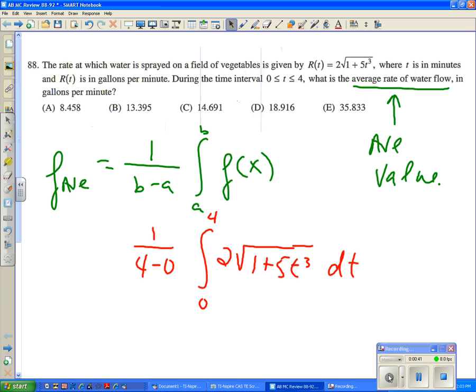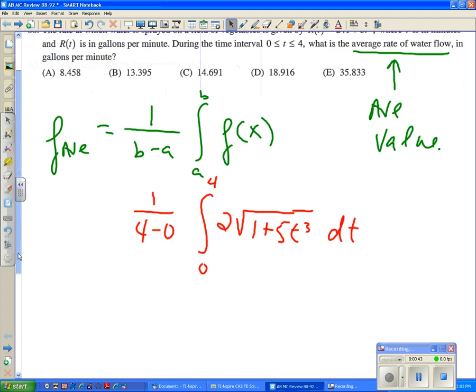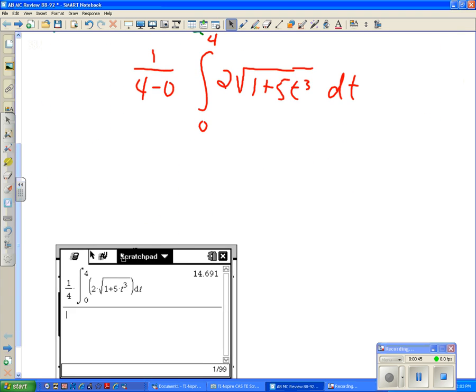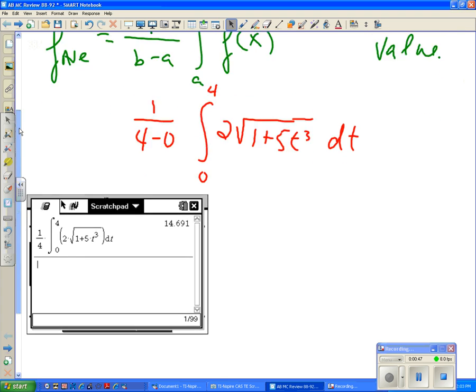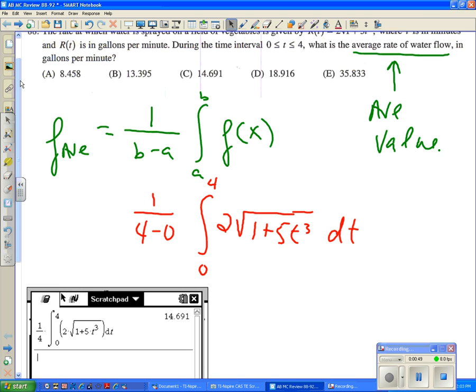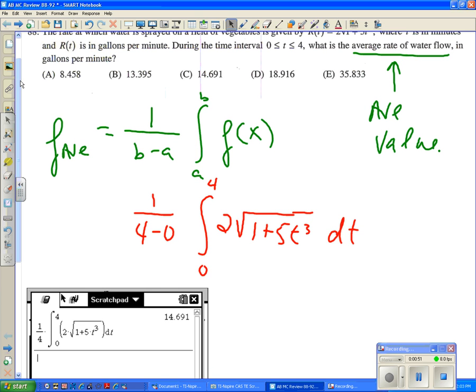And that's the setup. So if we go to the calculator, and I already have, so I'll just bring it up here and present it as my work done here. Carefully placing everything in, 1 fourth times the integral, 0 to 4, integrand, properly placed, we get 14.691, and that corresponds to letter C.